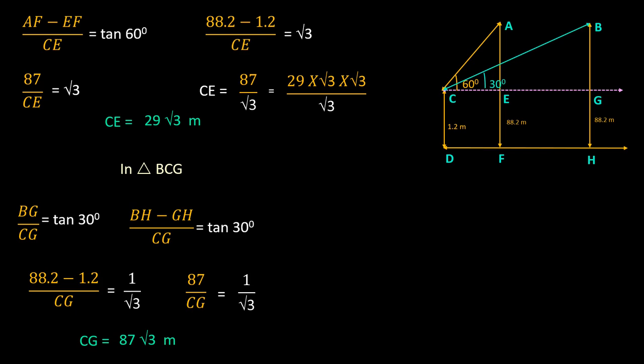Now, we have CG and CE. If we subtract CE from CG, we get the distance traveled by the balloon that is EG. Therefore, EG equals on substitution 87 root 3 minus 29 root 3 is equal to 58 root 3 meter.